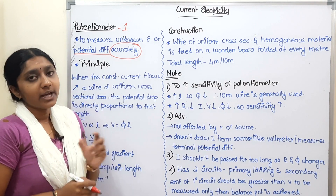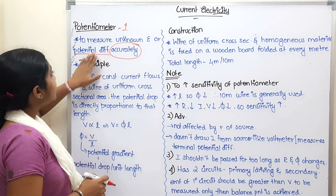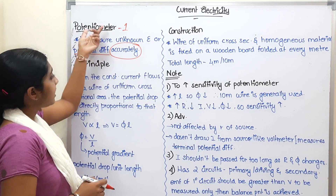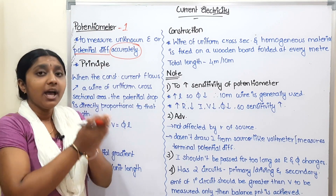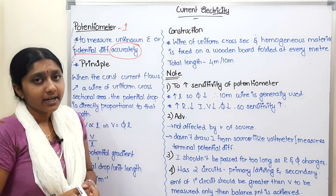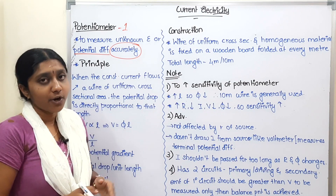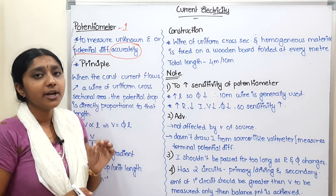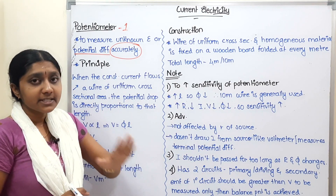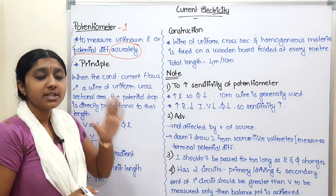So what is the first doubt? The question is: if we use a potentiometer, why do we need to measure potential difference with it rather than a regular voltmeter? We will discuss this important point.